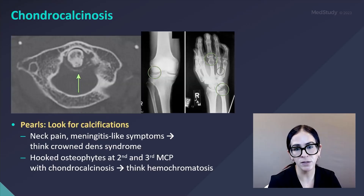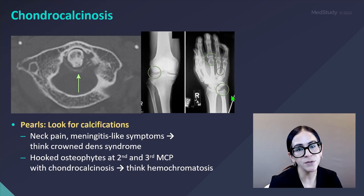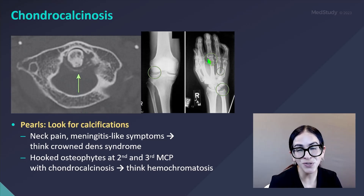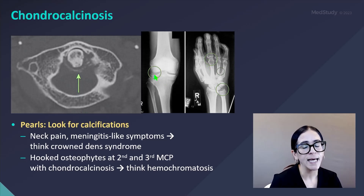Chondrocalcinosis — what does it look like? You can see it in the triangular fibrocartilage in the wrist, noted and circled in this image. You can also see it in the metacarpophalangeal joints and in the joint space in the knee.